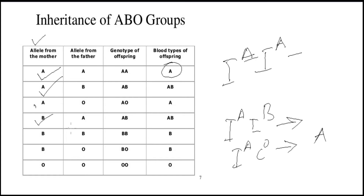In the fourth case, the mother has dominant B and the father has dominant A. The children will have AB composition of the gene, and the blood group of the children will be AB.